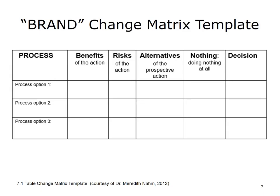This example BRAND template can be used to summarize and present process redesign options during a decision-making meeting. The template provides little detail about the process option other than a name or short description so that participants can see major differences. The purpose is not to redo the work of the analysis and redesign, but to make decisions based on the results, including evaluation of risks, costs, benefits, and alternatives.